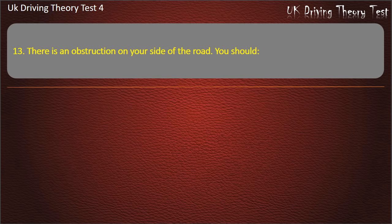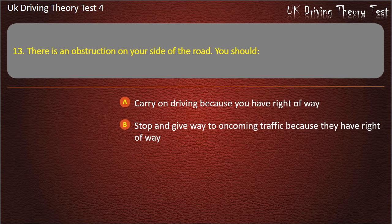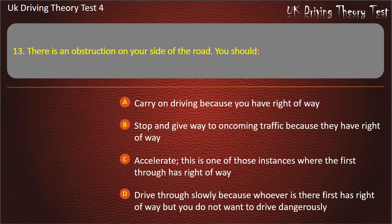Question 13. There is an obstruction on your side of the road. You should: carry on driving because you have right of way; stop and give way to oncoming traffic because they have right of way; accelerate; or drive through slowly because whoever is there first has right of way. Answer: Stop and give way to oncoming traffic because they have right of way.